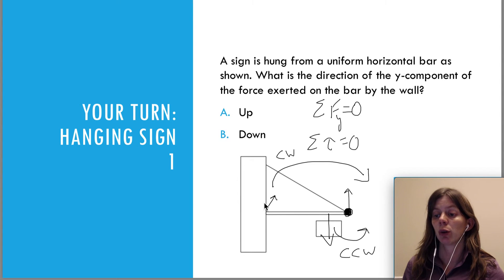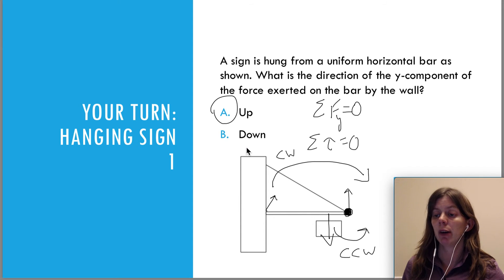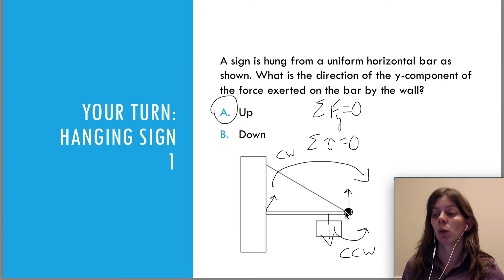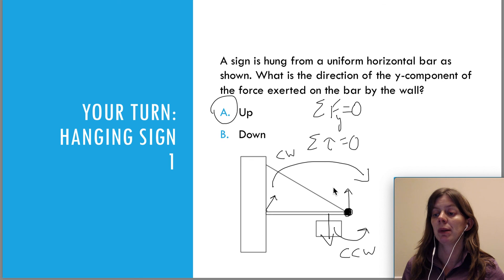So the answer to our question is that the y-component of the force by the wall on the bar is going to be upward. To recap this very important video: when you're picking the pivot point, pick it at the location where you have either the most unknown forces or any force that you just don't care about at the moment. Because wherever you pick the pivot point, any force there will exert no torque — the torque will be zero.